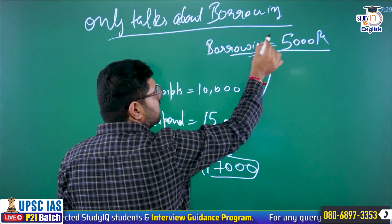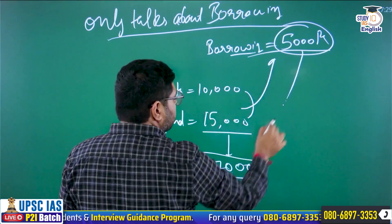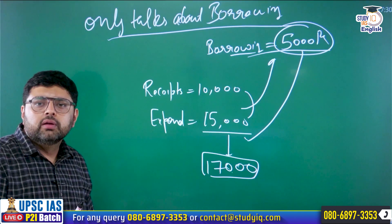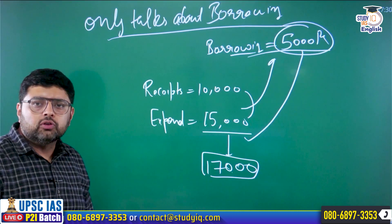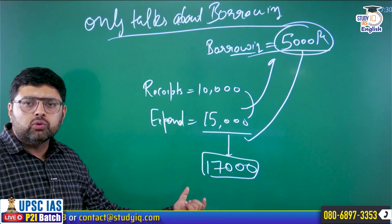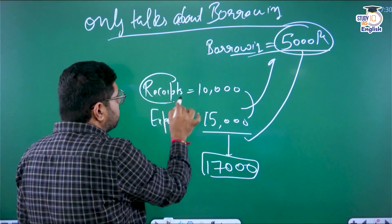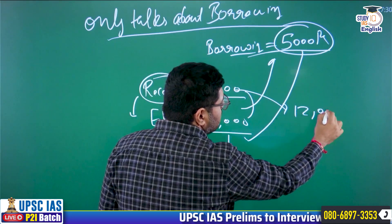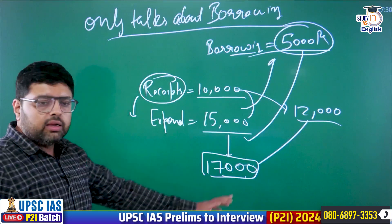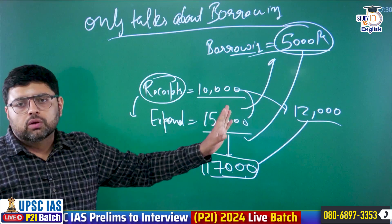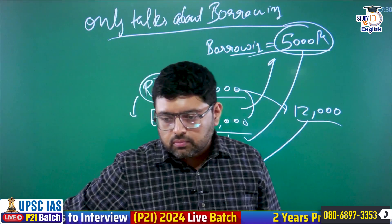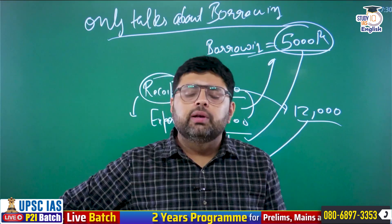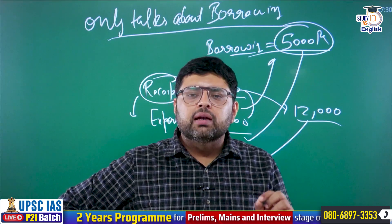The government then set a new deadline of 2014 — meaning by 31st March 2014 we had to achieve FD at 3%. But again we were not able to achieve it. The reason is that around 2014, our economy was facing inflation, and there were governance challenges including scams like the Coalgate scam, 2G scam, and Commonwealth scam. Due to these governance issues as well as inflation, we again missed the deadline.